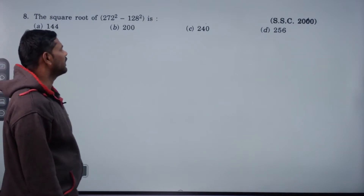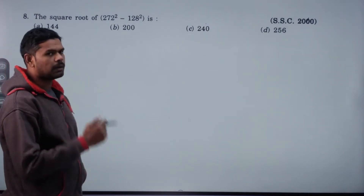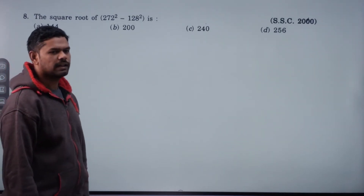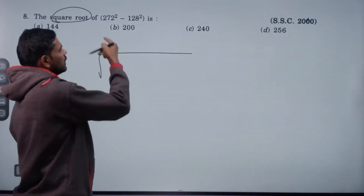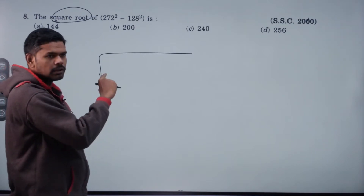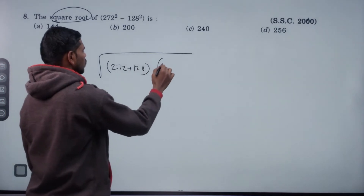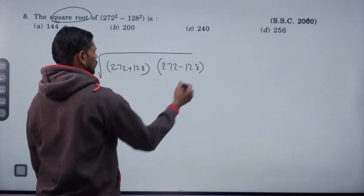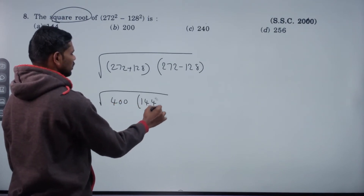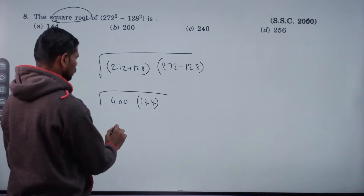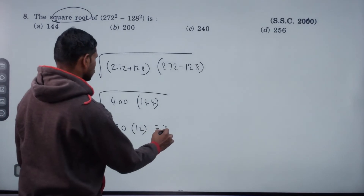Square root of 272 squared minus 128 squared. It is in the form of a squared minus b squared. Root of a squared minus b squared equals root of (a plus b) into (a minus b). 272 plus 128 is 400. 272 minus 128 is 144. Root of 400 value is 20. Root 144 value is 12. 12 into 20 is 240.